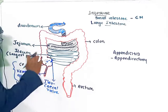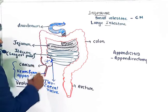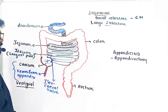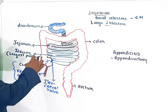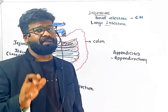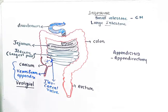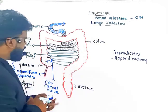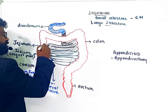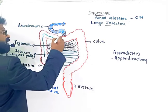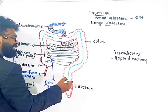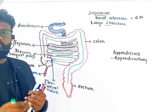The cecum also has some symbiotic microbes. Next is the colon, which is the longest part of the large intestine. The colon consists of four regions.